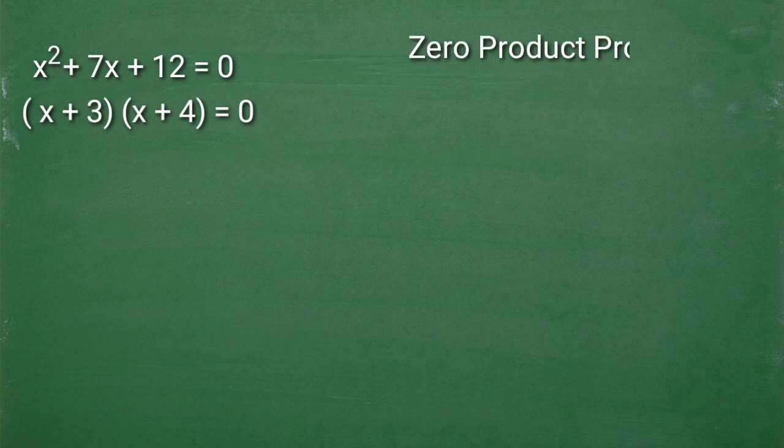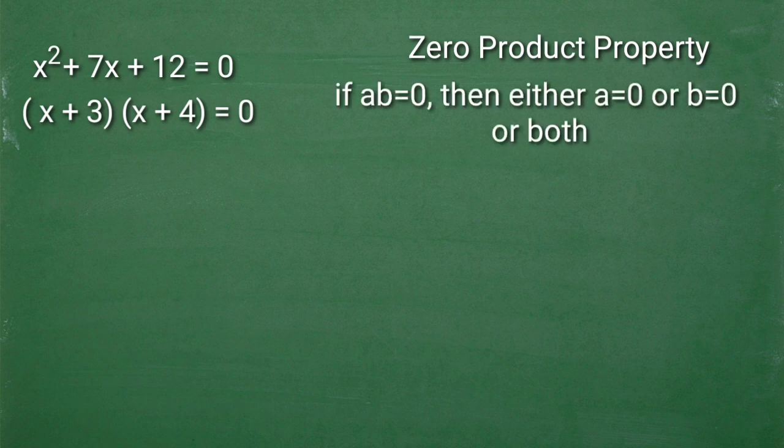The zero product property simply states that if a times b is equal to 0, then either a is equal to 0 or b is equal to 0 or both. So ibig sabihin, yung a natin dito, x plus 3. Yung b natin, x plus 4.